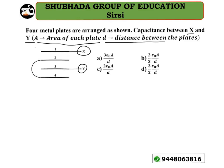Please remember: here is plate number one, plate number two, plate number three, and plate number four. Suppose the second plate and the fourth plate are connected to some voltage Z. This point is also connected to Z, so the voltage difference between Z and Y, as well as between Y and Z, is the same. When the voltage is the same, the capacitors must be connected in parallel combination.